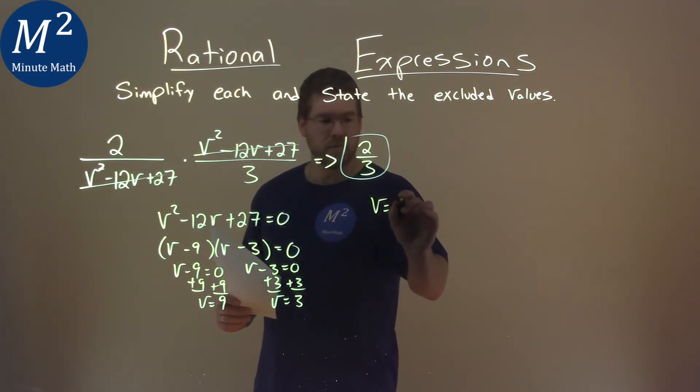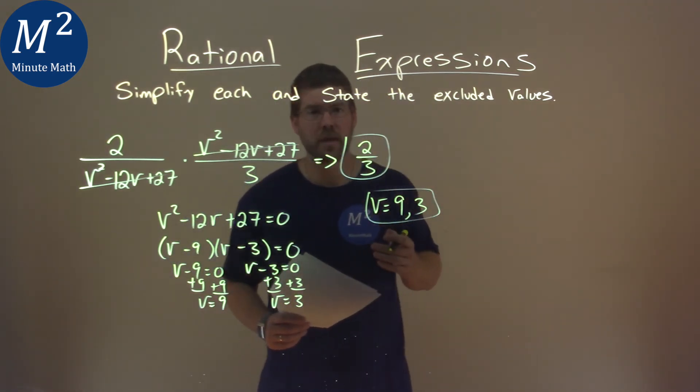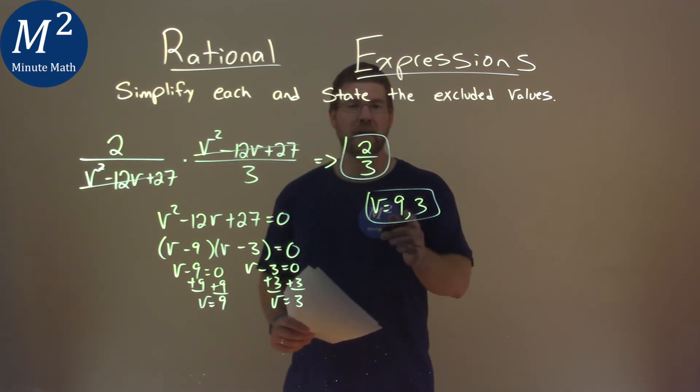So our excluded values are 9 and 3. And so again, our simplified final answer is 2 thirds, and our excluded values are 9 and 3.